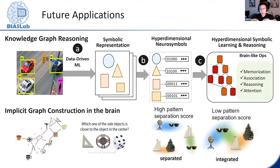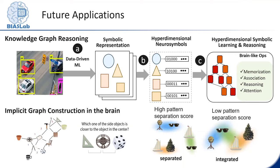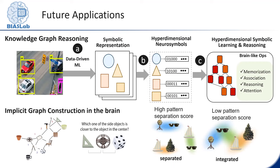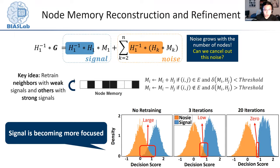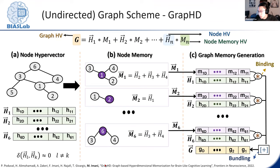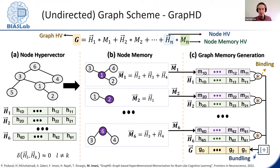An additional question is asked about the time frame to encode a graph in hyperdimensional computing versus regular computing. Joel notes he is not very familiar with the specific hardware speed-up statistics, and refers the questioner to the Graph-HD paper published in Frontiers in Neuroscience for the relevant benchmarks.